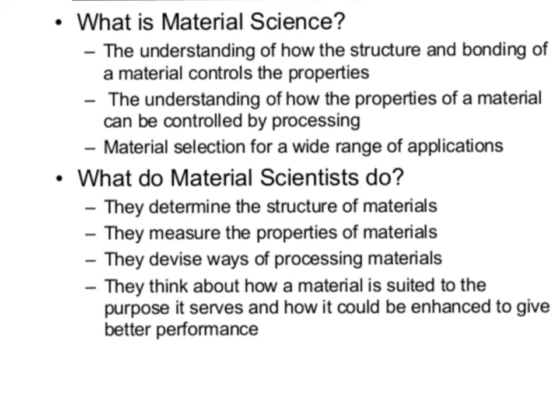The next thing is understanding how the properties of a material can be controlled by how you process the material. For example, sometimes how quickly you heat something, or how much heat you use, can determine what the final properties will be. Concrete is a great example — when they mix concrete, the amount of water they use and how long it takes to dry will determine how strong it is, and even what color and texture it is. So processing is part of understanding the materials you're working with.